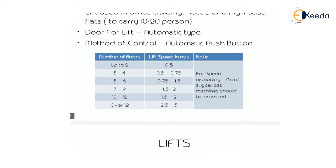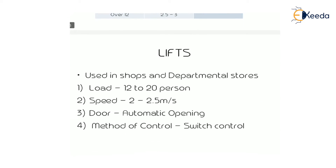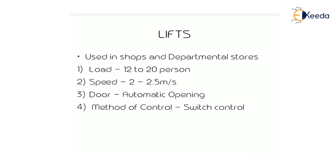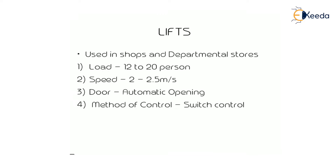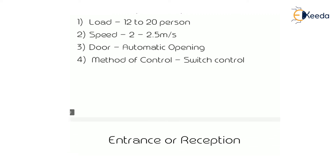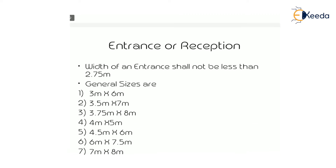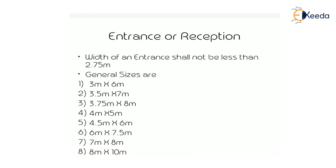For a lift used in a shop and departmental store, the person-carrying capacity is 12 to 20 percent load, speed is 2.0 to 2.5m/s, the door is automatic opening, and the method of control is switch control or automatic push button. The next common arrangement required in a public building is entrance or reception.